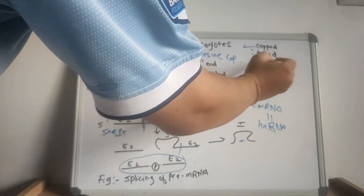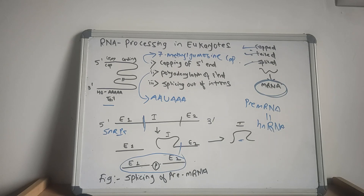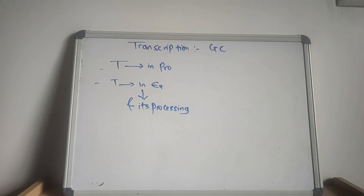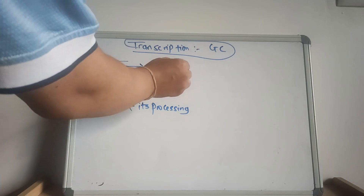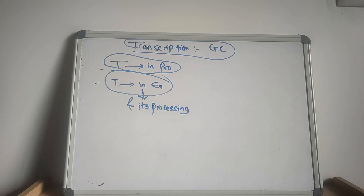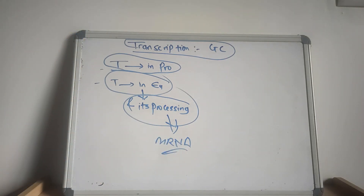The capped, tailed, and spliced mRNA is known as the mature messenger RNA, which undergoes translation. In this lecture we covered the general concept of transcription, transcription in prokaryotes, transcription in eukaryotes, and the processing of pre-mRNA which eventually leads to the formation of mature mRNA. Thank you so much for today's lecture on transcription.